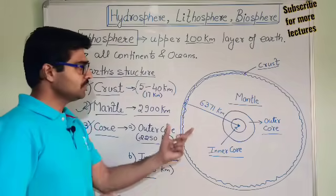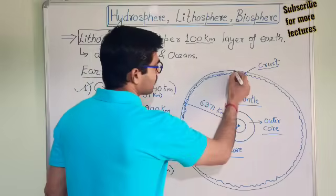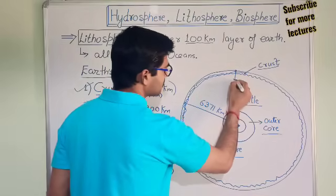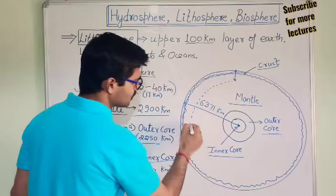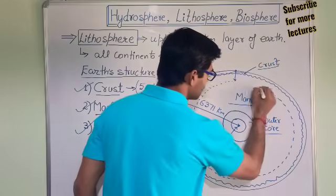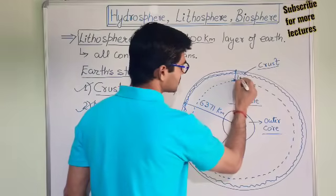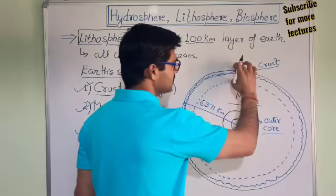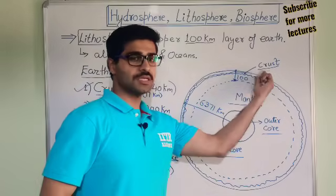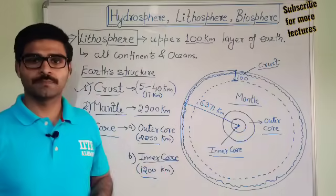From this diagram, try to understand the concept of lithosphere. From the surface down to a depth of 100 kilometers, this layer of Earth is the lithosphere. This includes the crust as well as some part of the mantle. So that is all about the lithosphere.